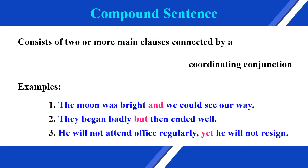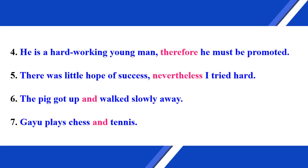The second one is compound sentence. A compound sentence consists of two or more main clauses connected by a coordinating conjunction. Examples: the moon was bright and we could see our way; they began badly but then ended well; he will not attend office regularly, yet he will not resign; he is a hardworking young man, therefore he must be promoted; there was little hope of success, nevertheless I tried hard; Gopu plays chess and tennis.